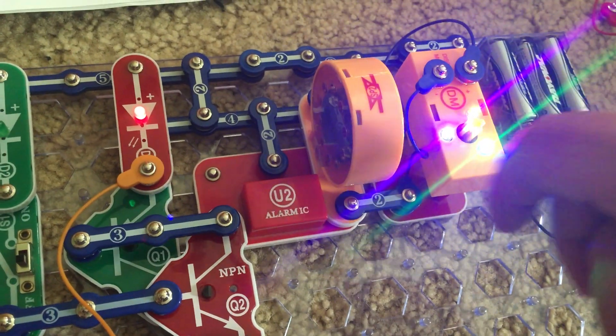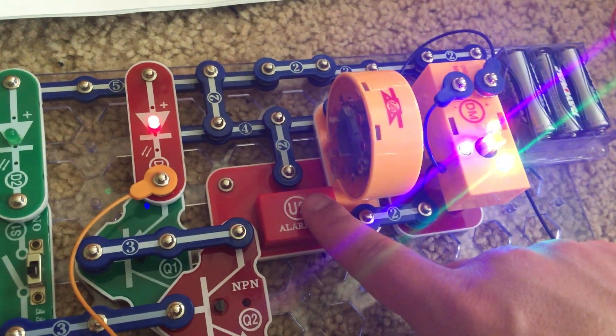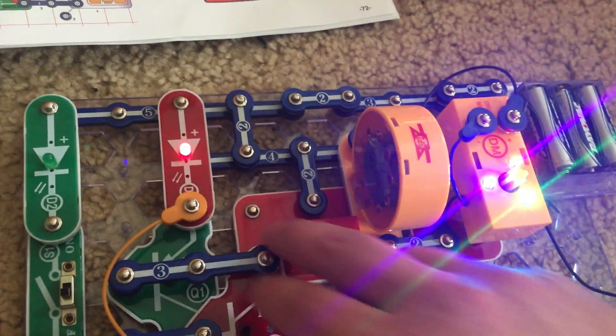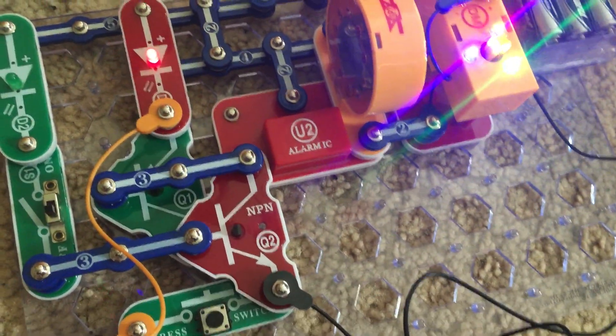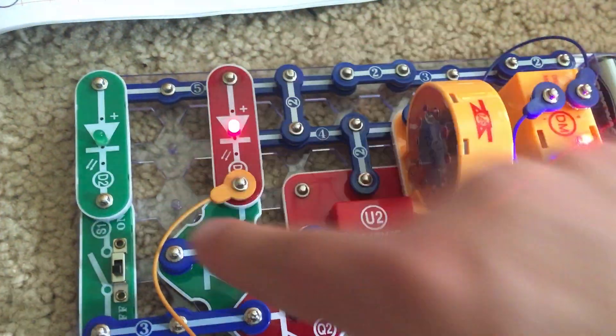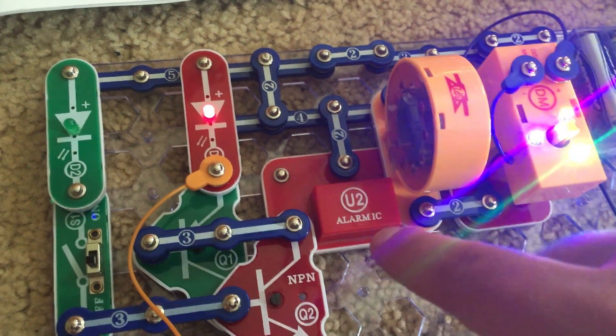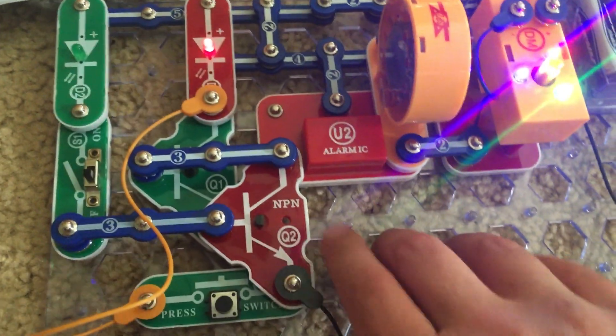Disco motor is spinning and lighting up, the alarm is sounding, and the red LED is on. The green LED is connected directly to the slide switch so it will go off when the slide switch is turned off.